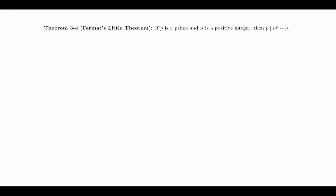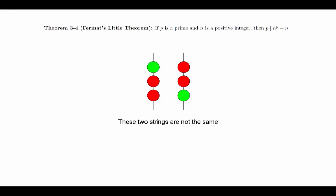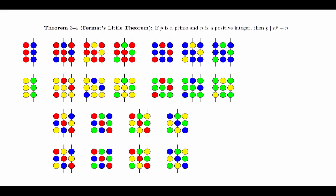Theorem: If p is a prime and n is a positive integer, then p divides n to the p minus n. We are going to imagine creating strings of beads of length p, where we have beads of n different colors. We can use the same color multiple times, and we have enough of each color that we will not run out. For our example, we're going to look at the case where p equals 3 and n equals 4. Since we have four choices for each of the three beads, we can use the general combinatorial principle to see that there are 4 times 4 times 4, or 64 strings that we can make without worrying about flipping the string over or other manipulations. Specifically, this means that two strings with reversed bead order should be considered to be different.